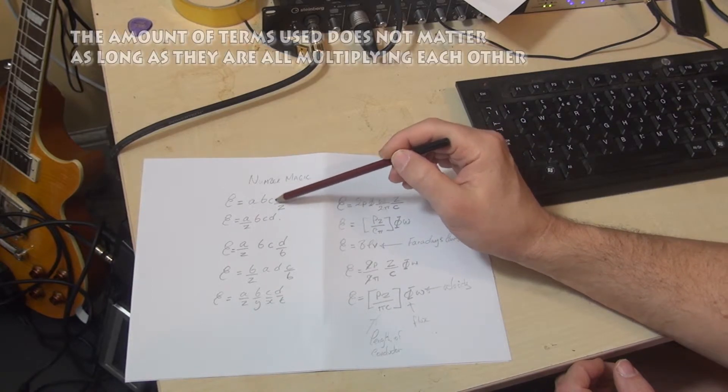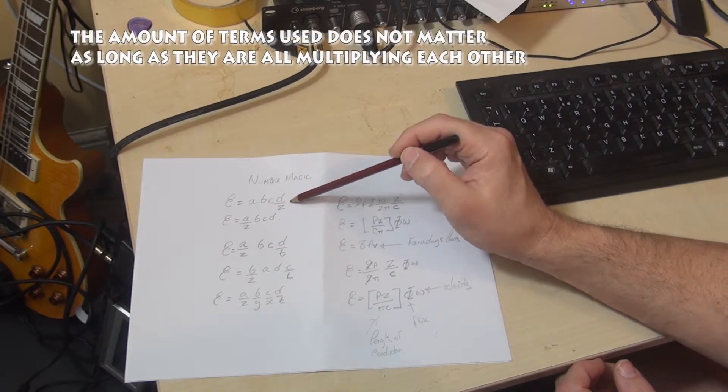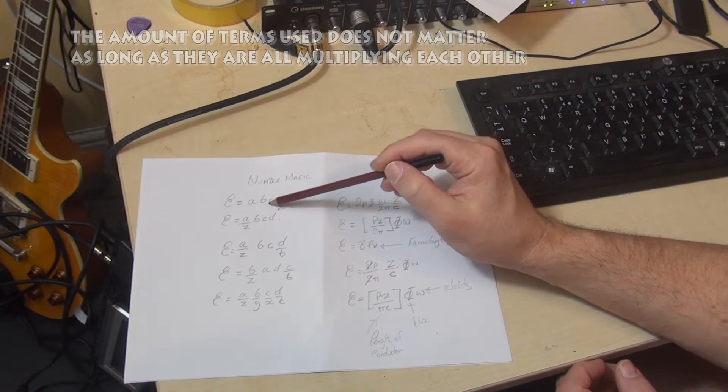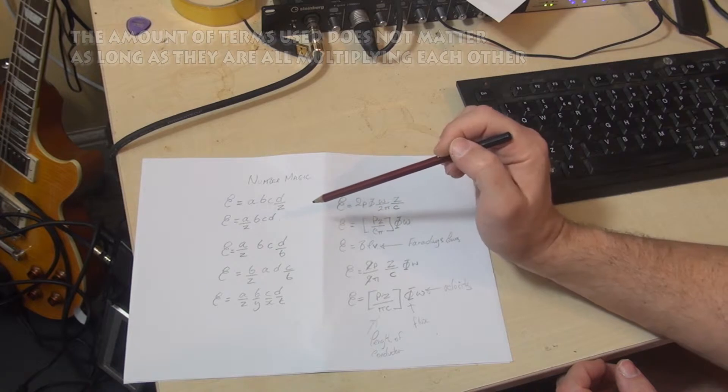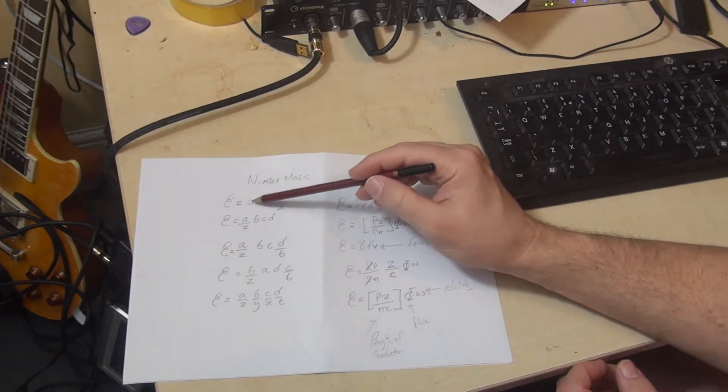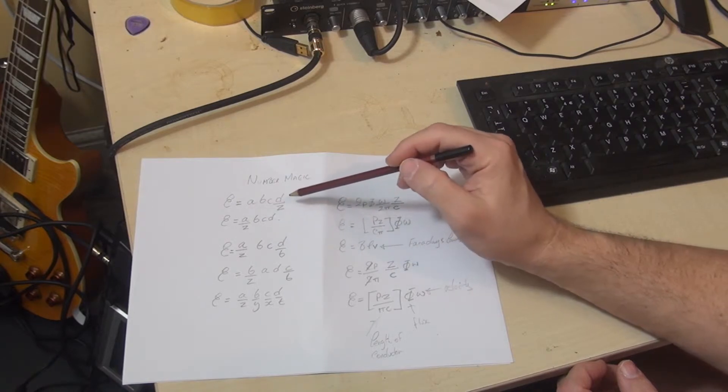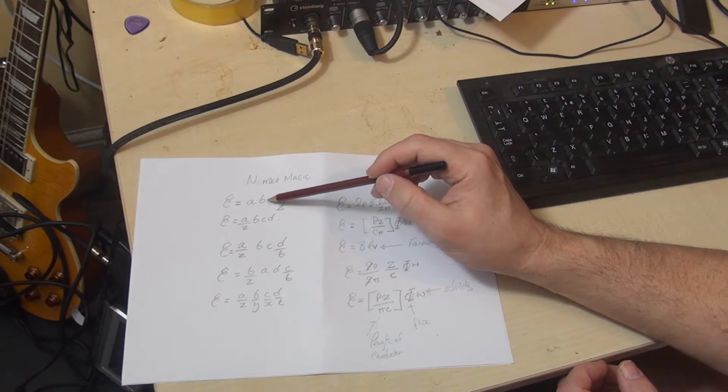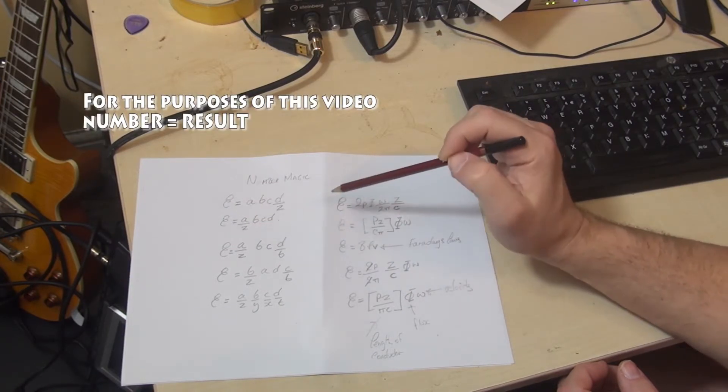A, B, C and D, and the final term D is divided by Z. It turns out though, that we can move Z and divide any of the other terms by Z and still get the same answer. So, if you were to plug some numbers into this and try it out for yourself, you would see that we could have Z dividing C, B, or A, we would still get the same number.